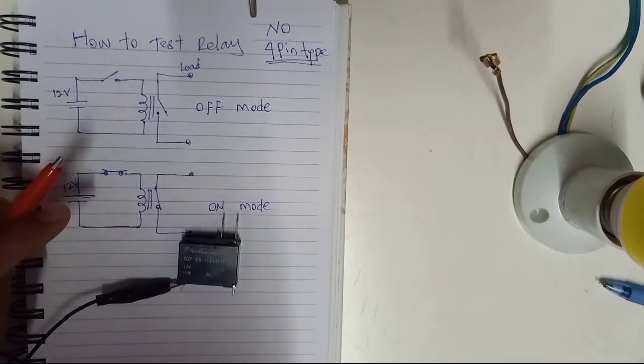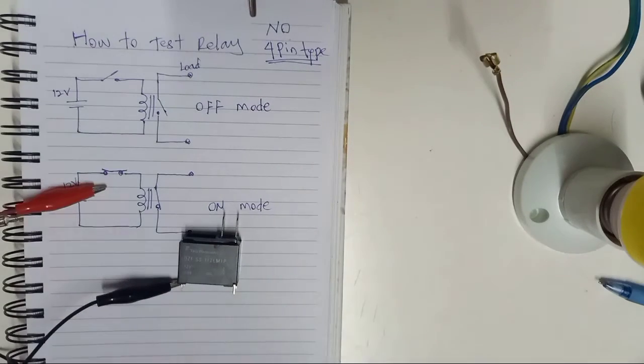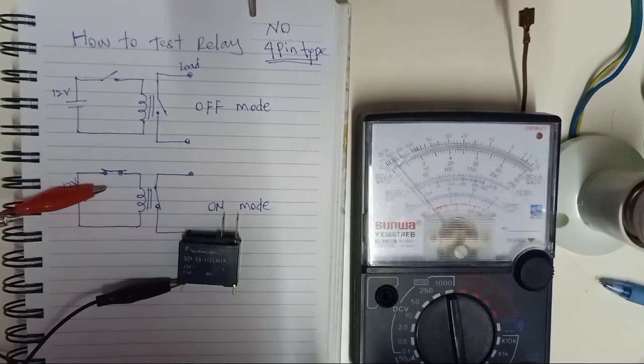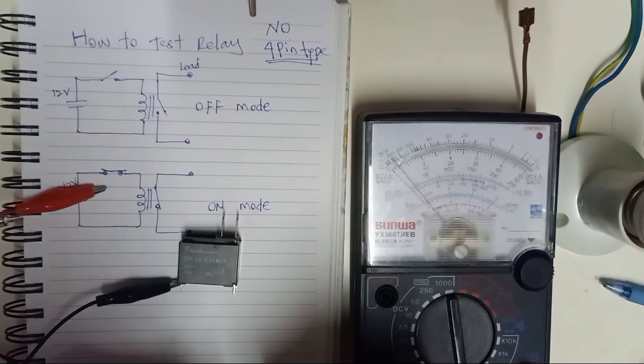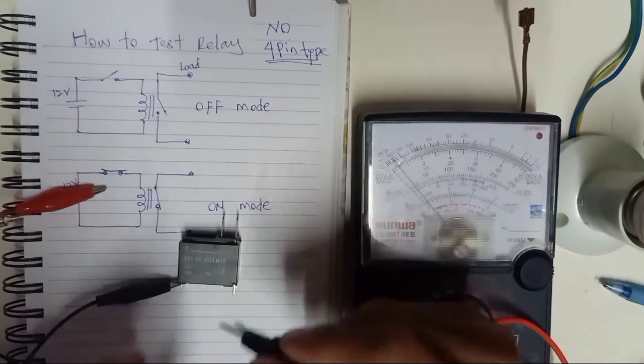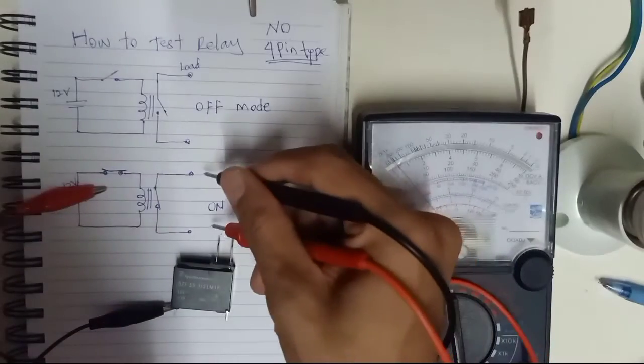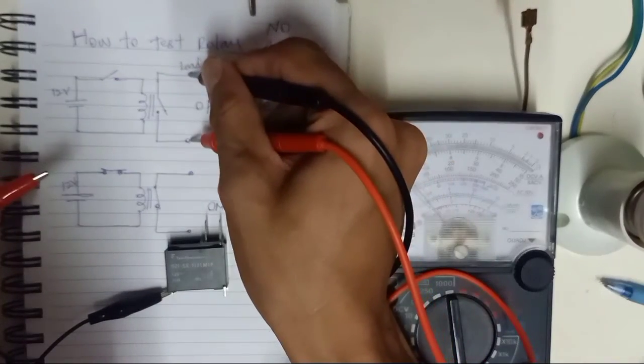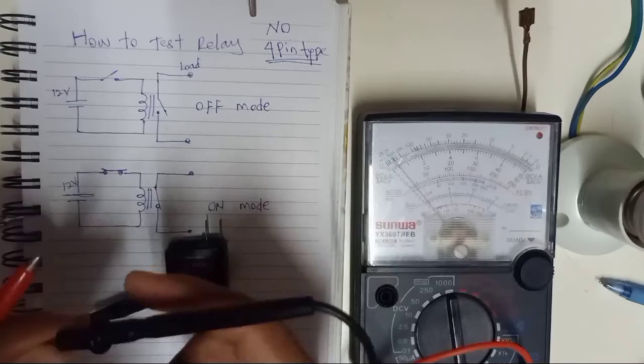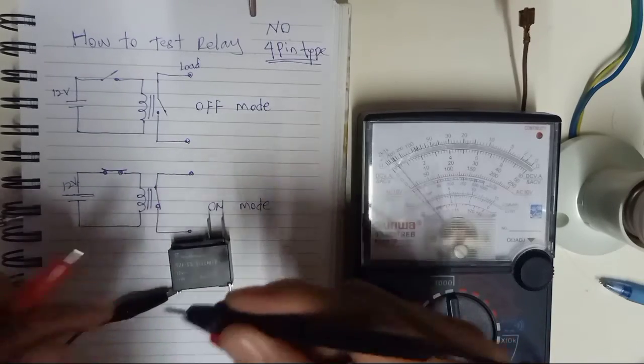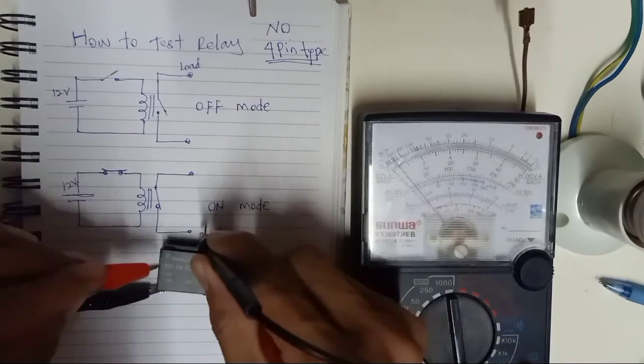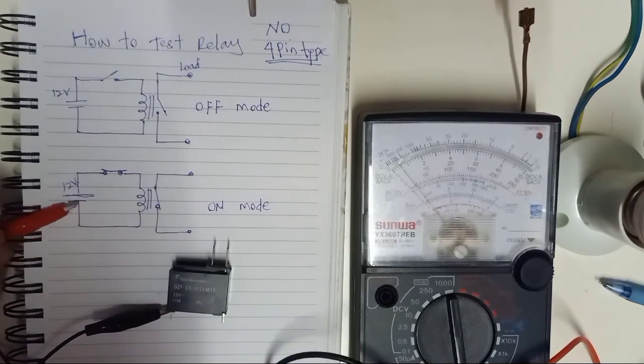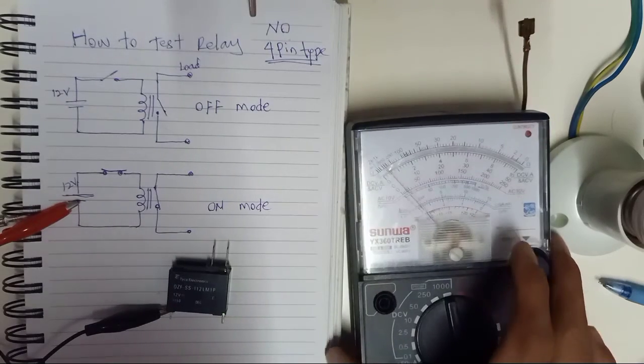If you use analog multimeter, take your analog multimeter and use it on connectivity. This is the output. Right now the trigger is not supplied yet, so now it's off mode. Off mode must be open circuit. This is how we test with multimeter relay, which is four pin type.